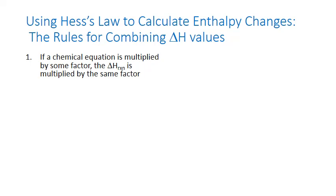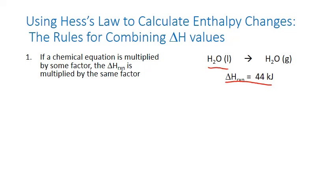Here's the first rule: if a chemical equation is multiplied by some numerical factor, then the enthalpy is multiplied by the same numerical factor. For example, the enthalpy associated with the vaporization of one mole of water from liquid to gas is 44 kilojoules. This is a thermochemical equation, so the enthalpy value is scaled to the coefficients — it means 44 kilojoules per one mole of liquid water and per one mole of gaseous water.